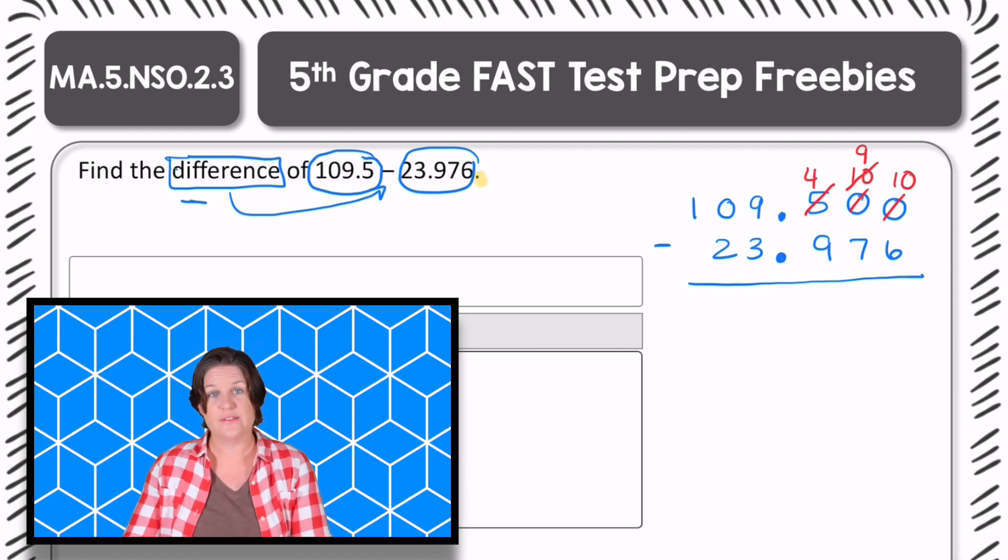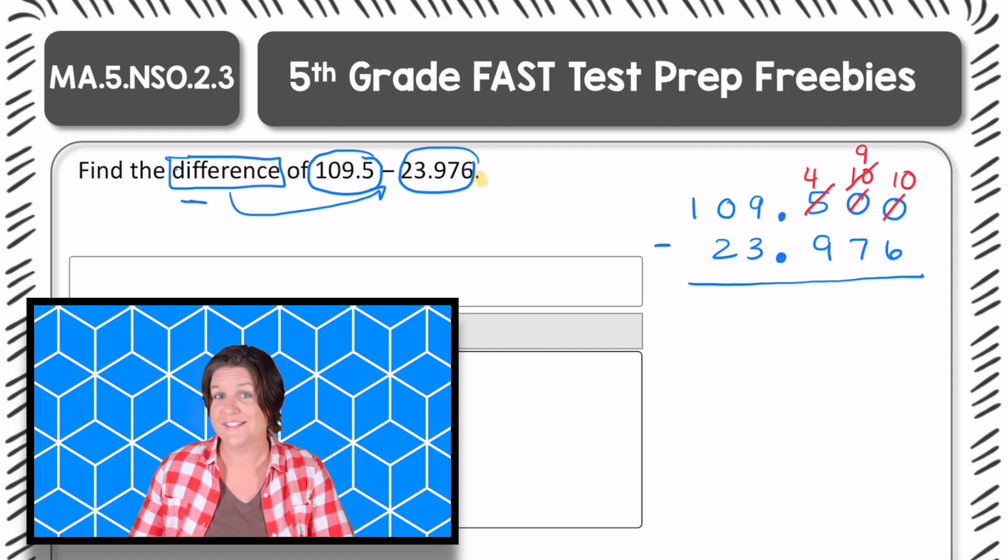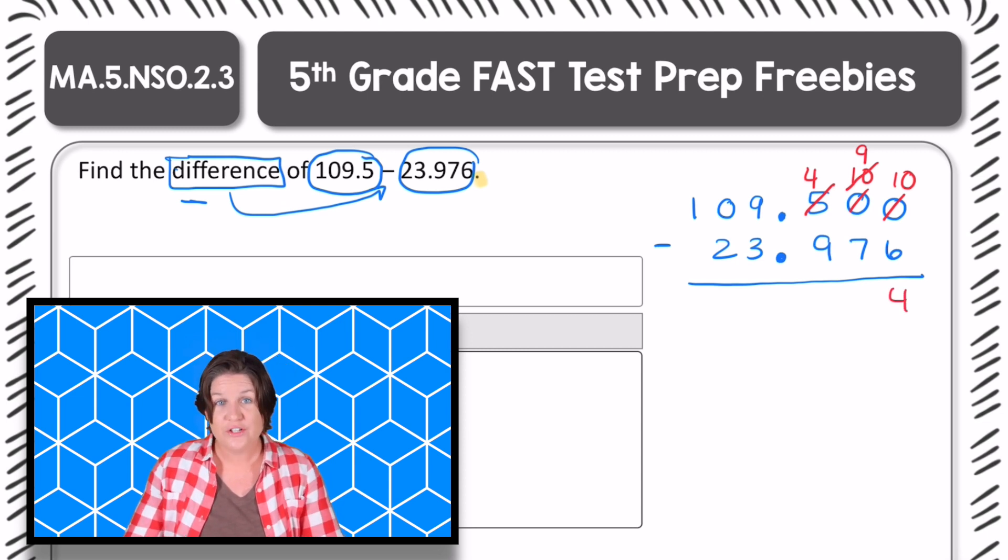Ten thousandths minus six thousandths is? Four thousandths. Nine hundredths minus seven hundredths is what? Two hundredths.